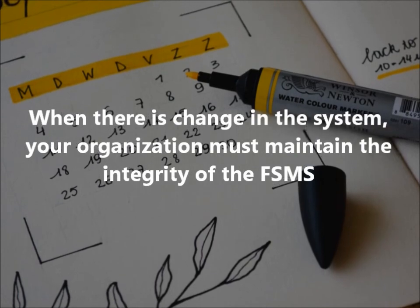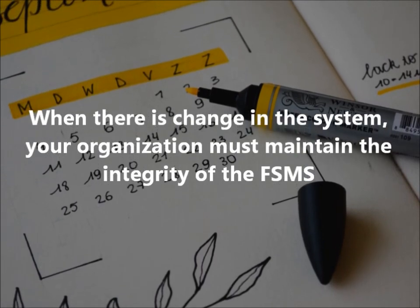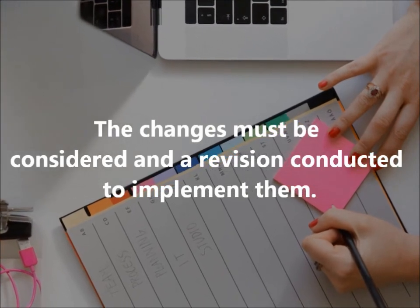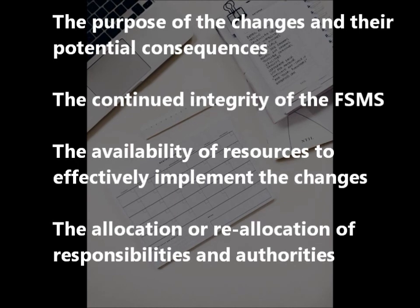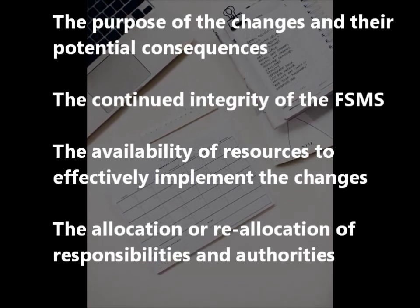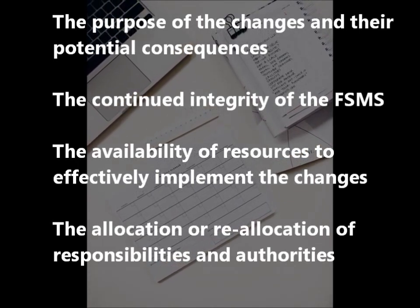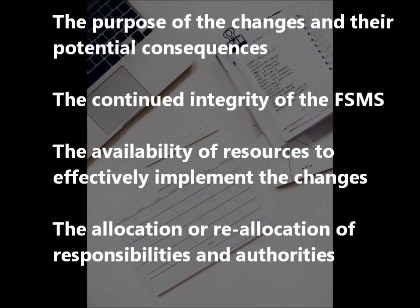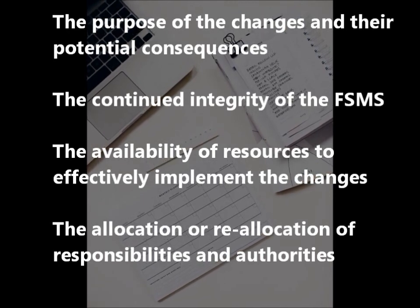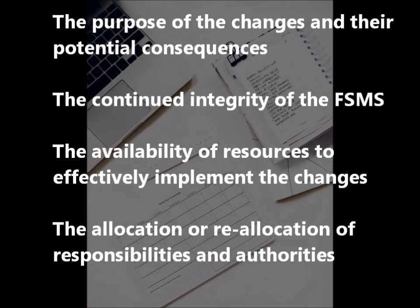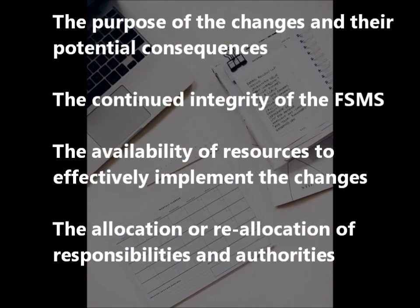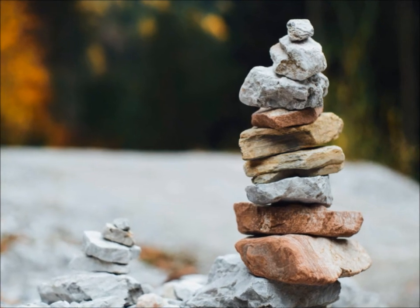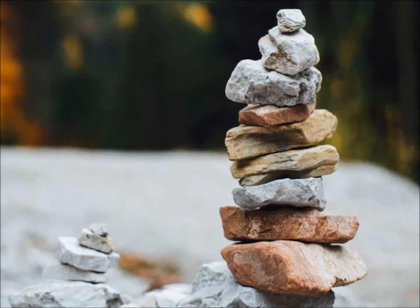6.3 — Planning of changes. When there is a change in the system, your organization must maintain the integrity of the FSMS, so the changes must be considered and a revision conducted to implement them. As per the standard, the following should be taken into account: the purpose of the changes and their potential consequences, the continued integrity of the FSMS, the availability of resources to effectively implement the changes, and the allocation or reallocation of responsibilities and authorities.